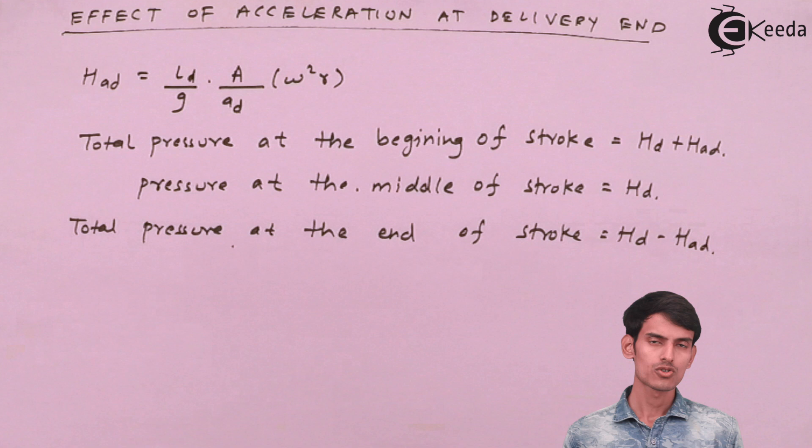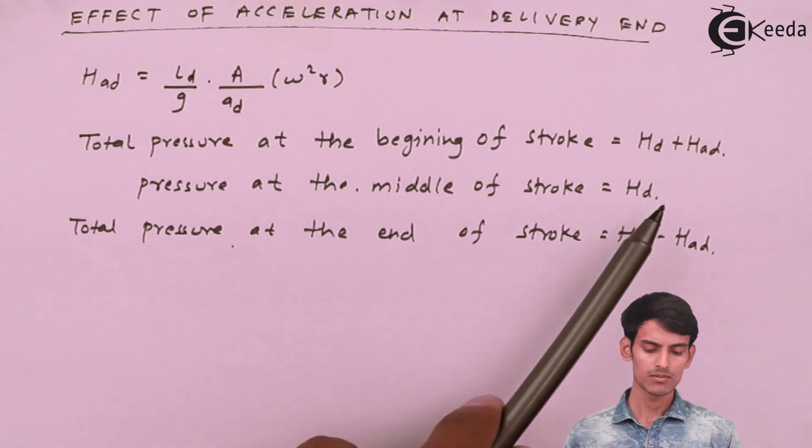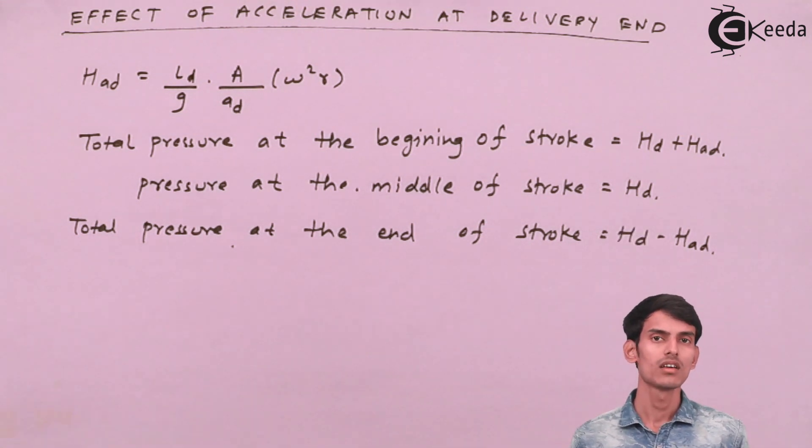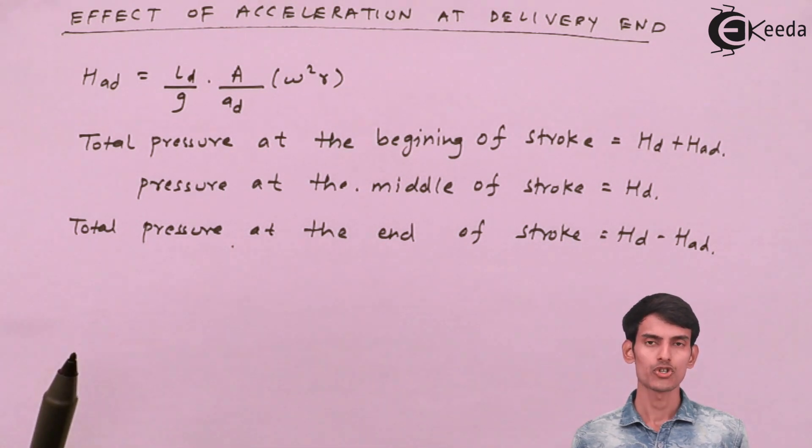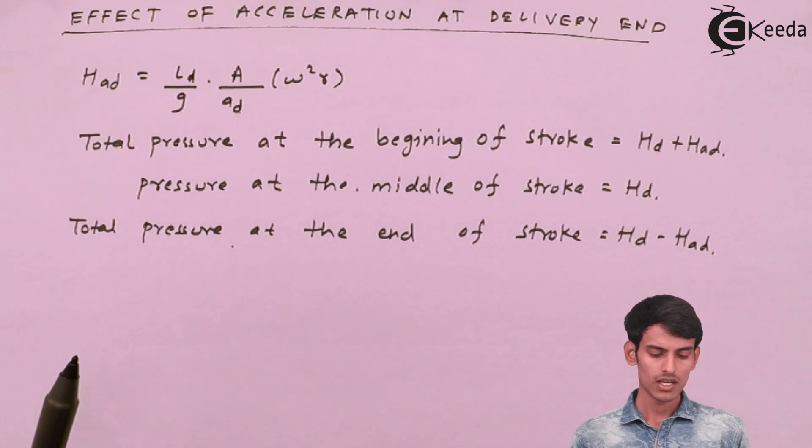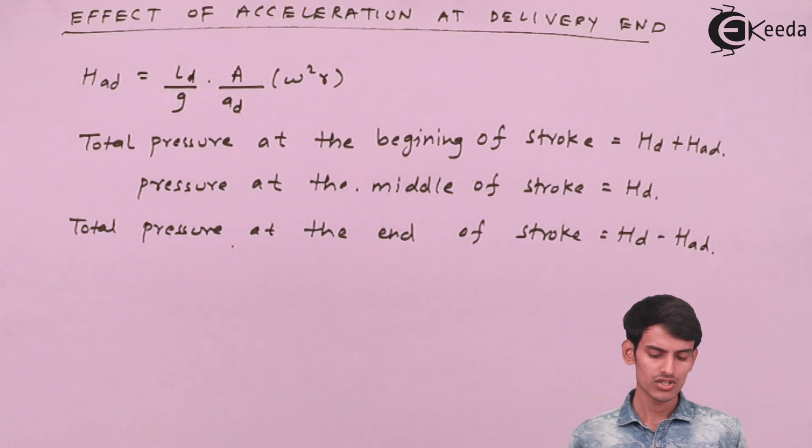At the middle of the stroke, the value of HAD becomes zero. We've already seen that at 90 degrees, the cosine component becomes zero. Now at the end of the stroke at 0 degrees, HD minus HAD will come because the cosine of minus 180 is minus 1, so HD minus HAD.